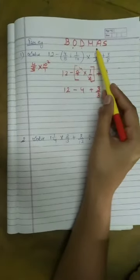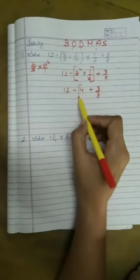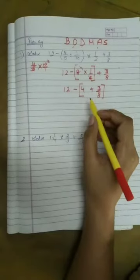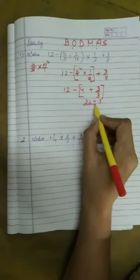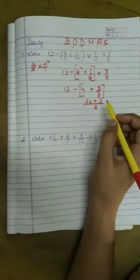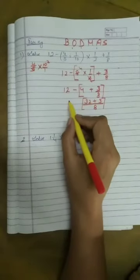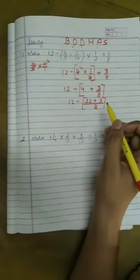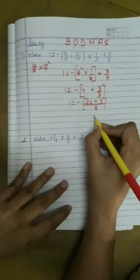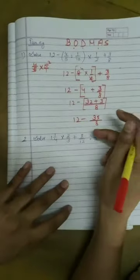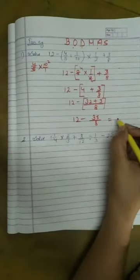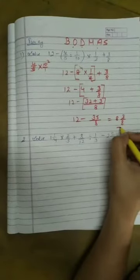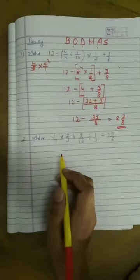Plus 3 by 8. Now, fifth step is A, it means addition. We have to add first. So we add 4 plus 3 by 8. To add this we take LCM. This becomes 32 plus 3 by 8, taking LCM. Now we solve the complete addition, 32 plus 3, this becomes 35 by 8. Our last expression remaining is 12 minus 35 by 8. Now we solve this.